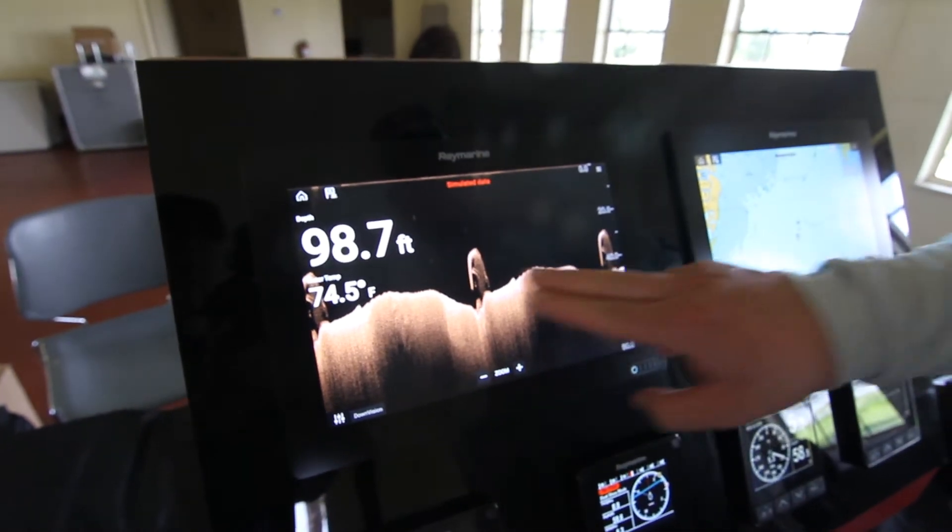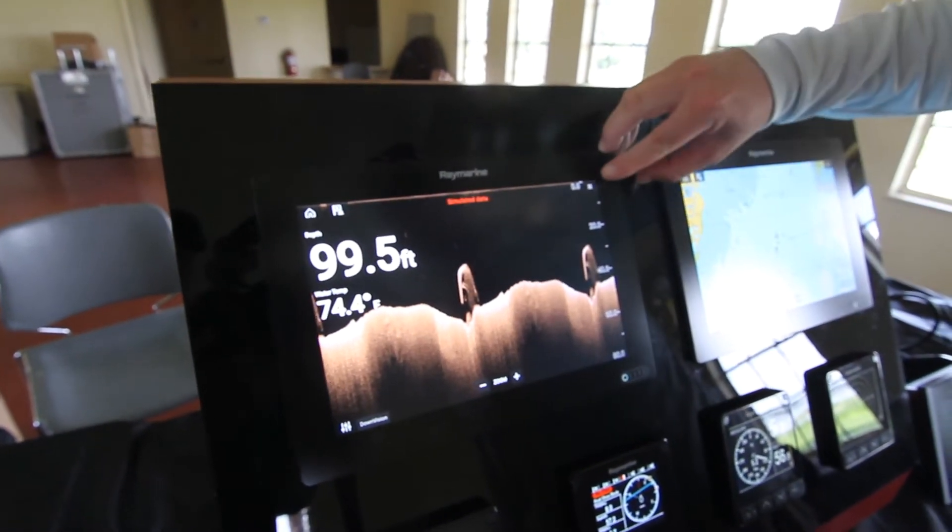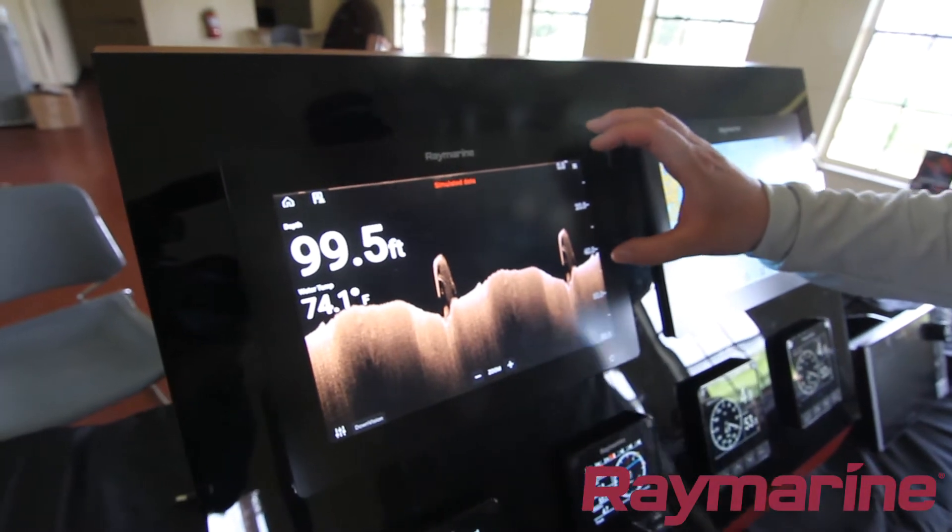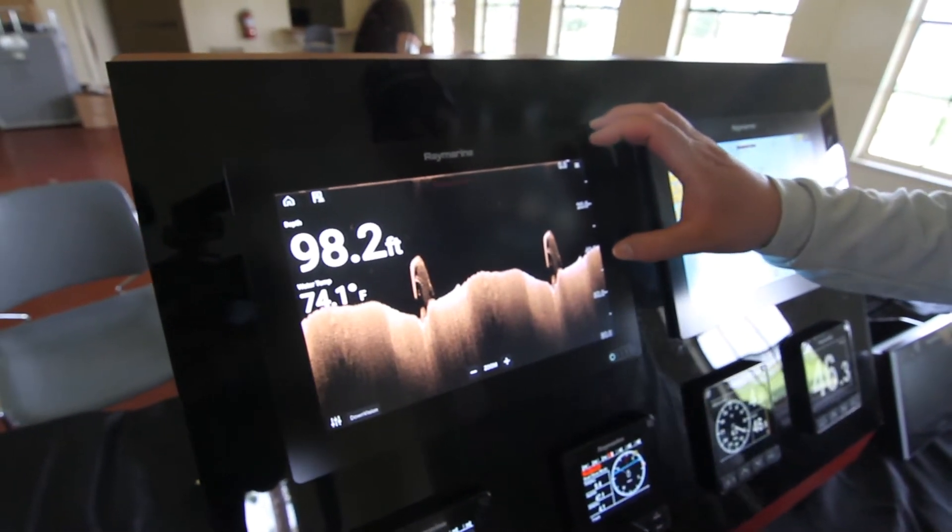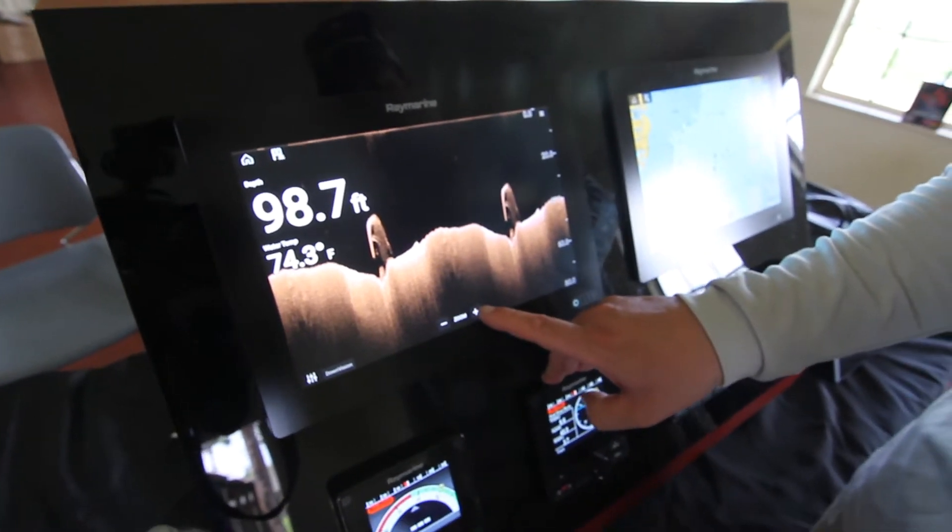When Axiom is running in its normal display, we have a nice view from the water column down here to the bottom of the lake or the bottom of the ocean, wherever you happen to be fishing. If you want to see a little bit more detail, you can engage the zoom controls here on the bottom.